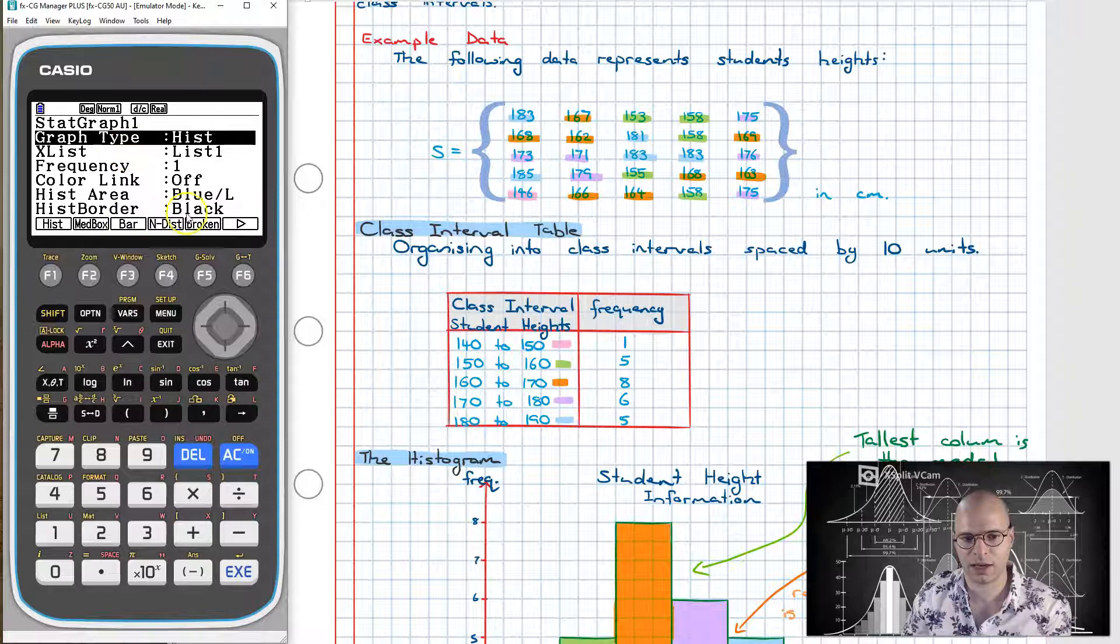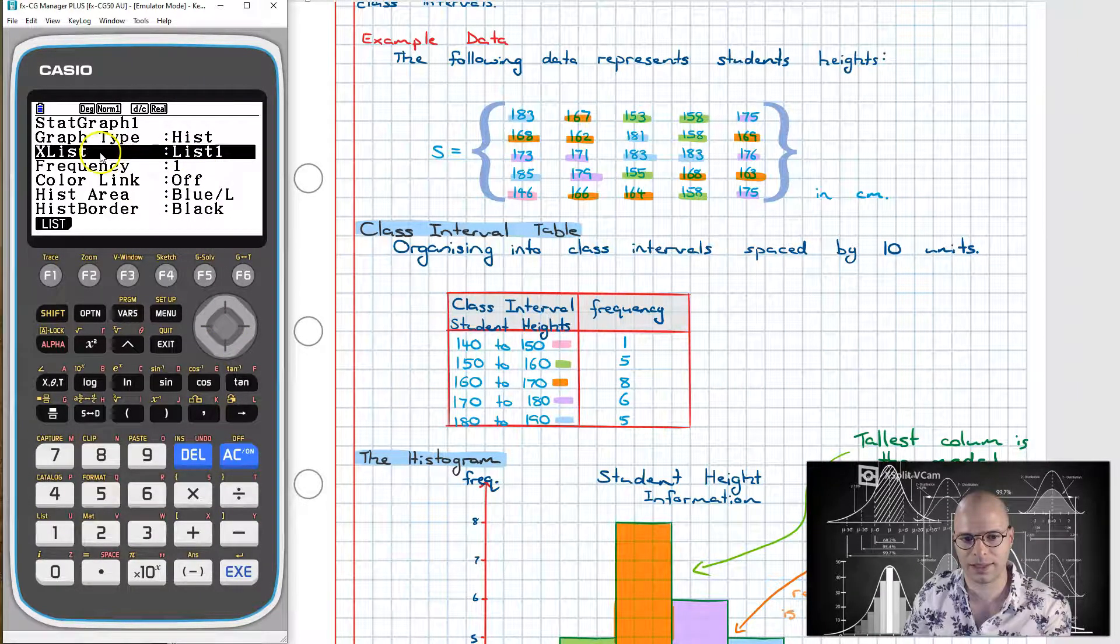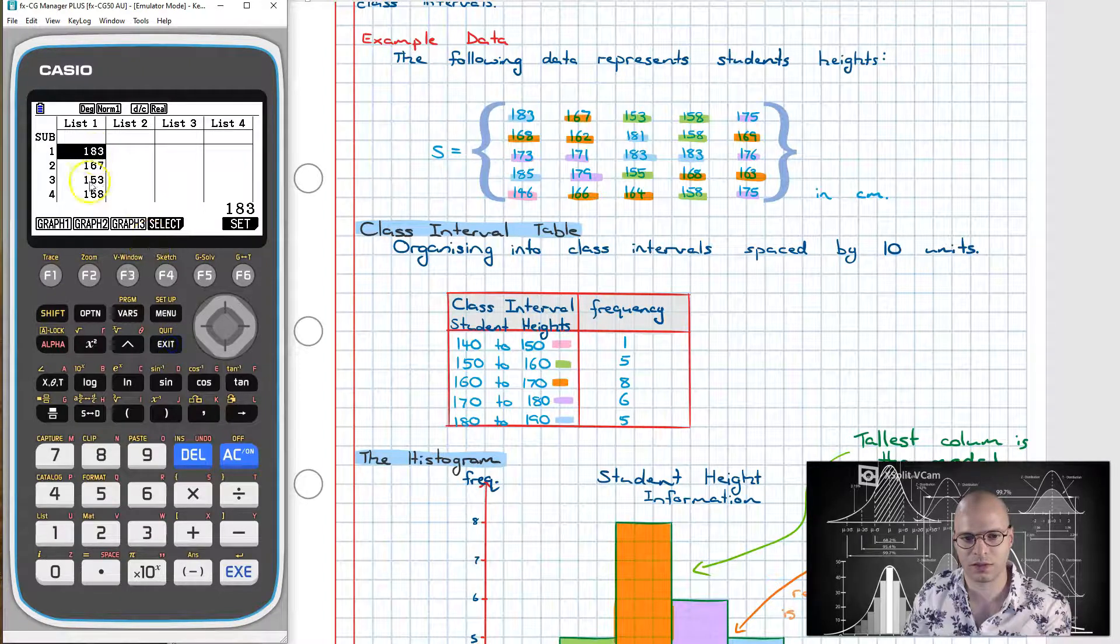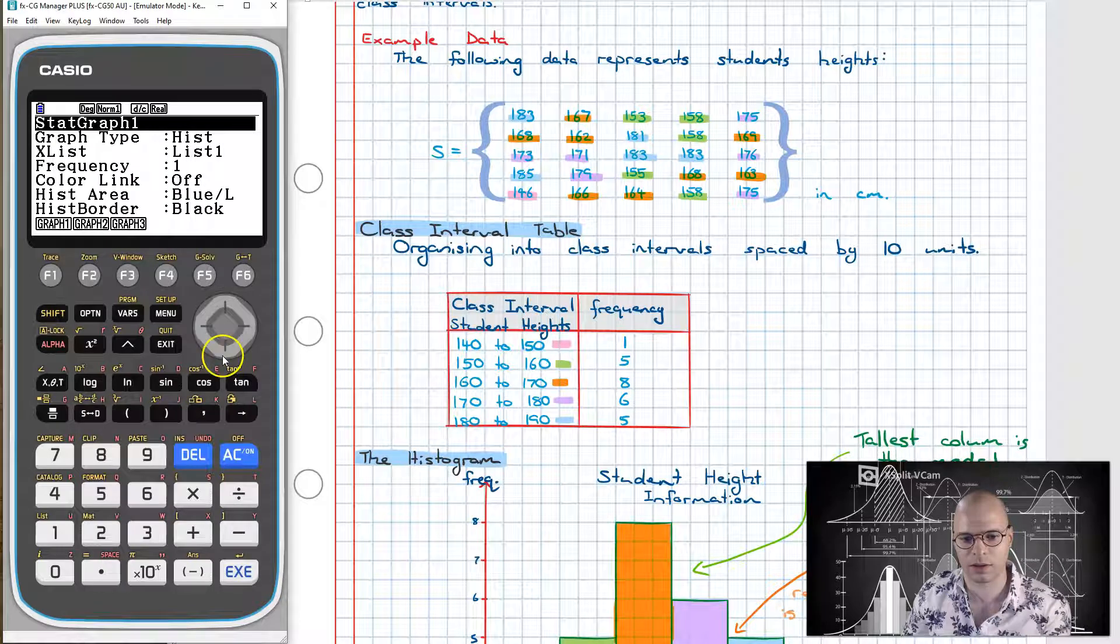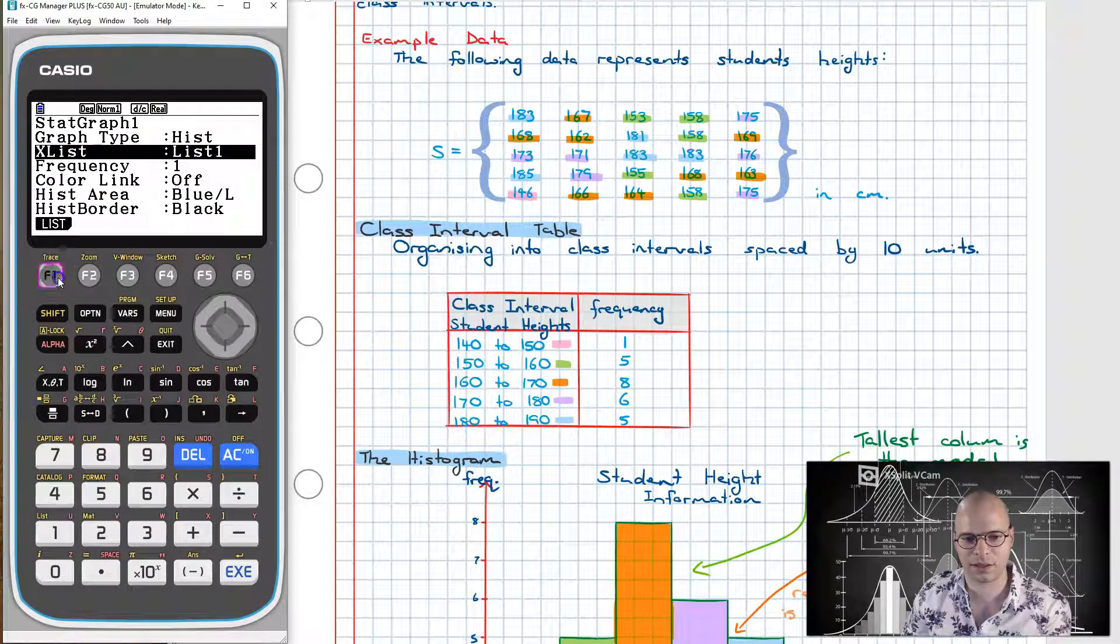Now this will change the data we have in here. What I'm then going to do is navigate down and make sure that this list corresponds to the list we have over here. So in this one our data is in list 1. So what that means is I need to set this to list 1. In this case I click on list. So F1 and then I'll set it to list 1.